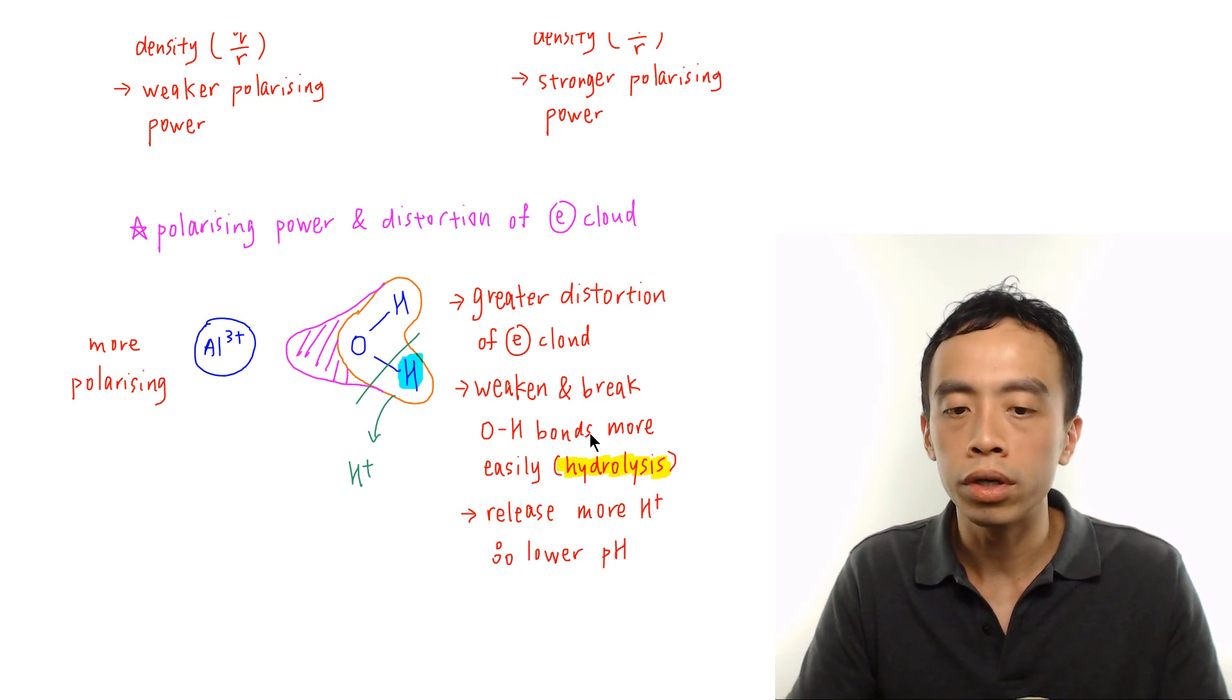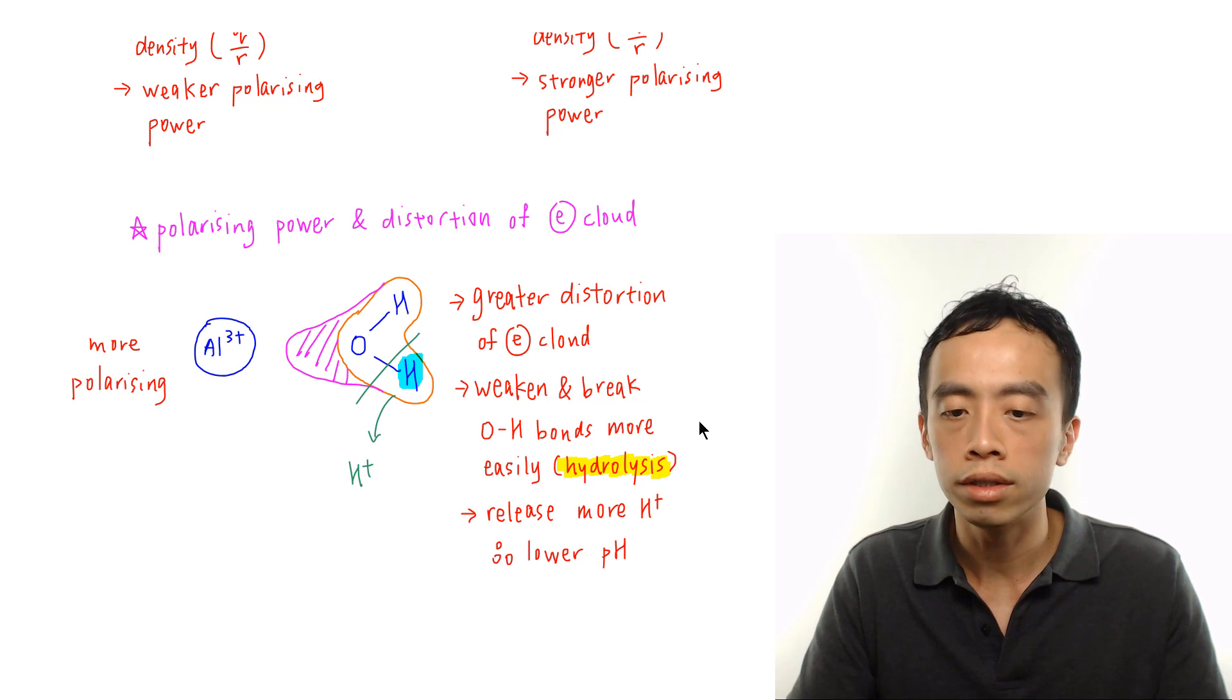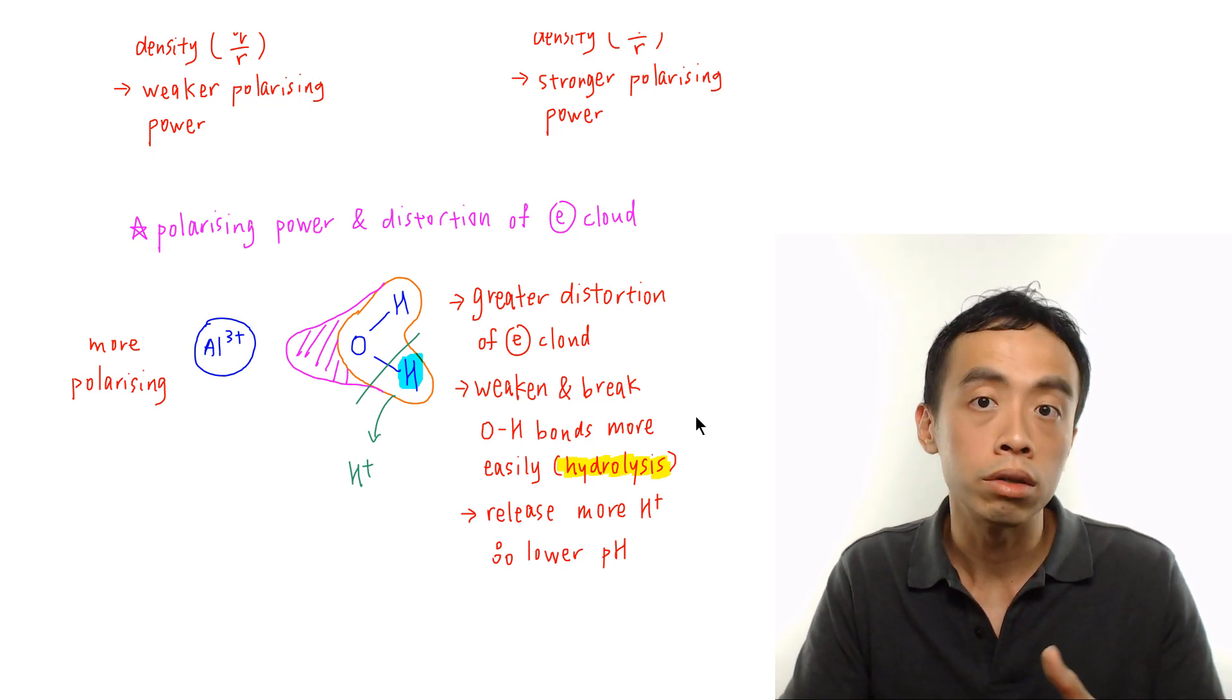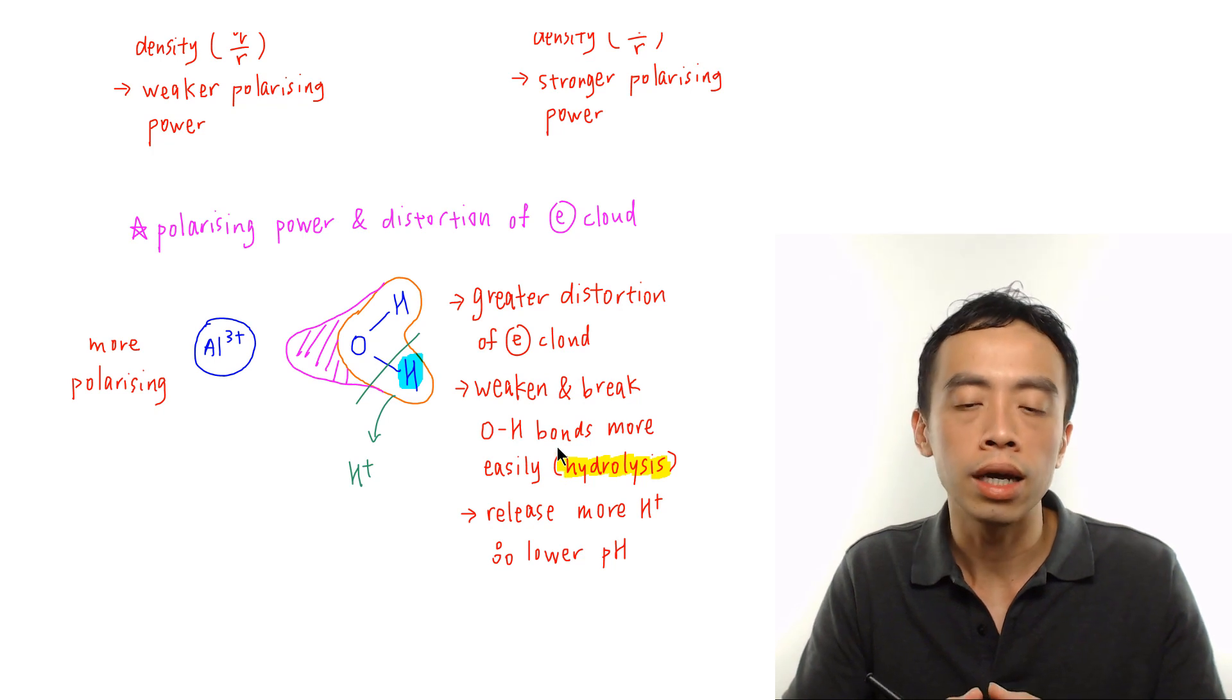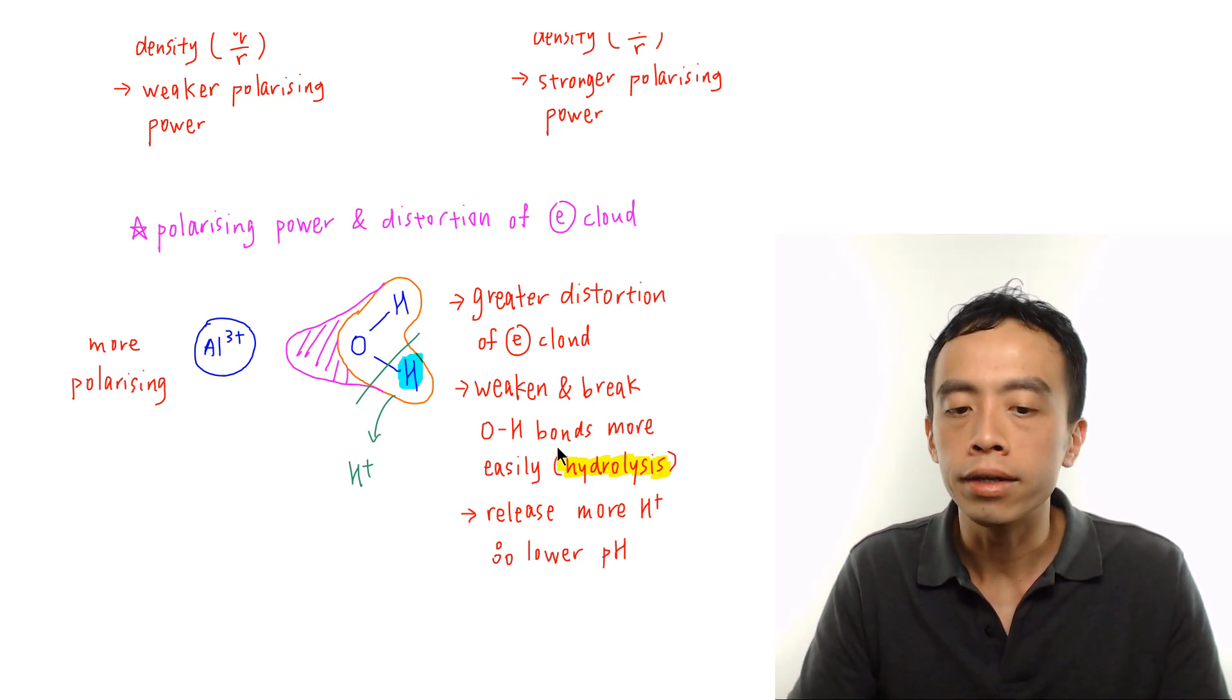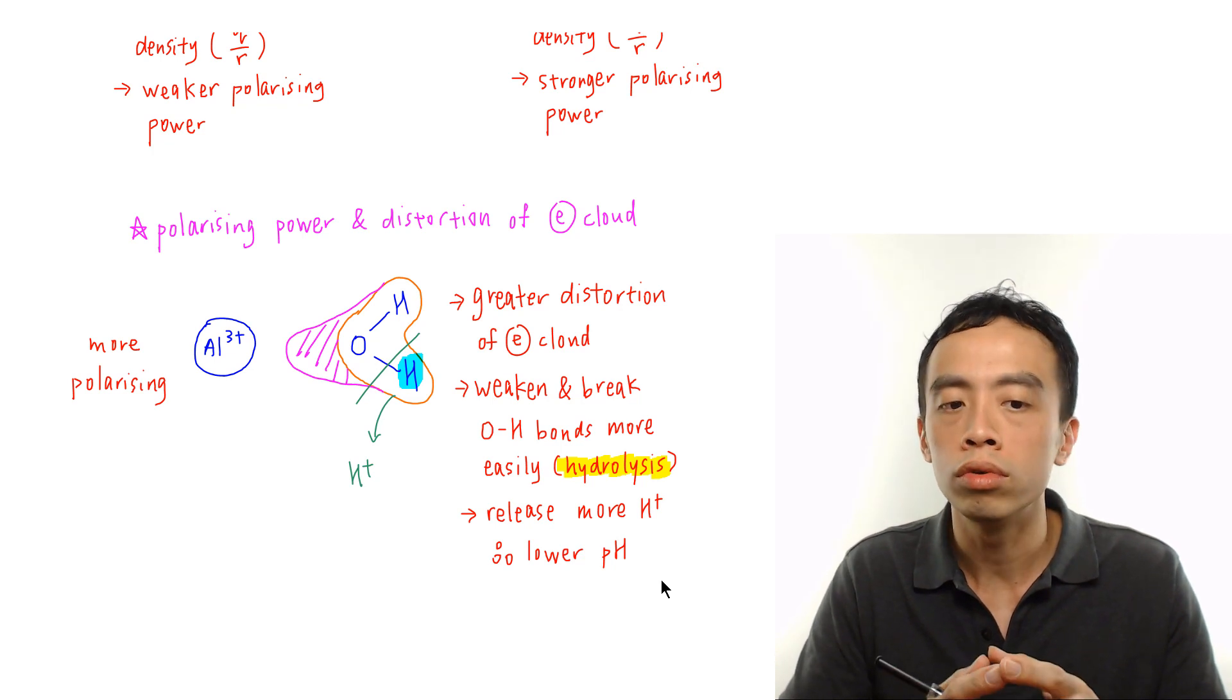So the process of breaking OH bonds to release H+, we call this hydrolysis since effectively it is the reaction involving water. So if the OH bond is weaker and it hydrolyzes more easily then I can release more H+, and it causes the pH of the solution to decrease.